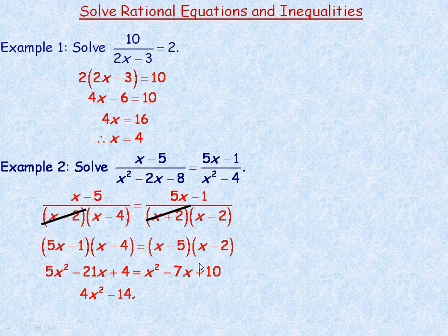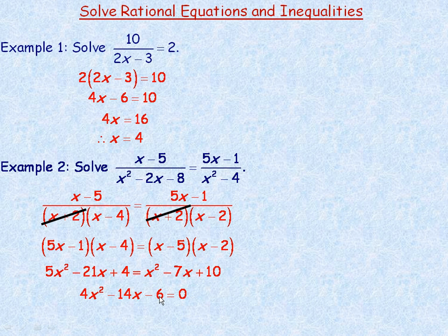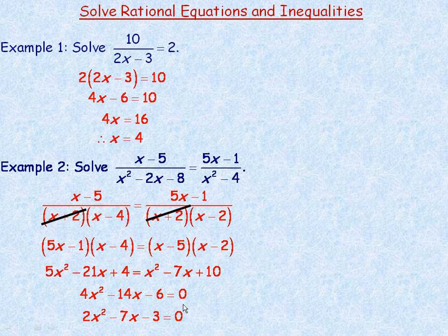Now rearrange and set everything on one side equal to 0. Subtracting x squared from both sides gives 4x squared. Adding 7x to both sides gives negative 14x. Subtracting 10 gives negative 6. This doesn't factor — there are no numbers that add to negative 14 and multiply to negative 24. Dividing everything by 2 simplifies it, but still no numbers add to negative 7 and multiply to negative 6, so we bring in the quadratic formula.